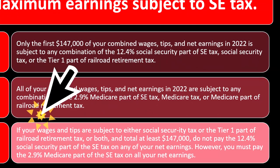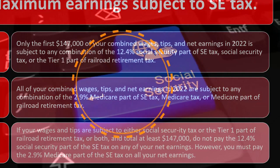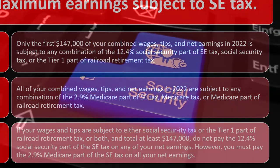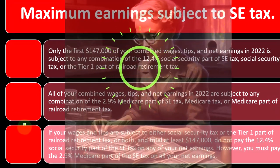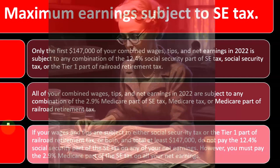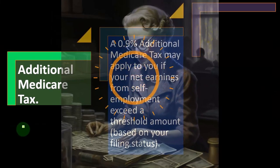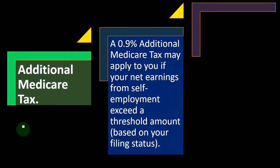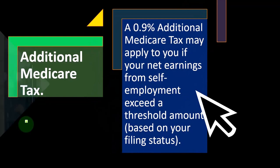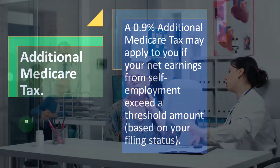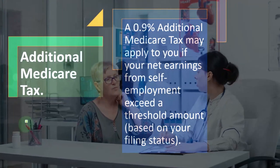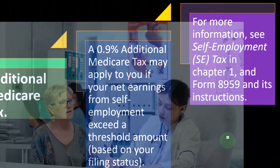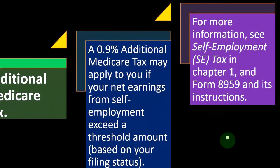All combined wages, tips, and net earnings in 2022 are subject to the 2.9% Medicare portion of the SE tax — there is no cap. If your wages and tips already total at least $147,000 and are subject to Social Security tax, you do not pay the 12.4% Social Security SE tax on additional net earnings, but you must still pay the 2.9% Medicare SE tax on all net earnings. Additionally, a 0.9% additional Medicare tax may apply if your net self-employment earnings exceed a threshold based on your filing status — see Form 8959 for details.